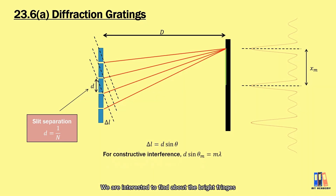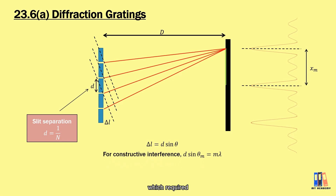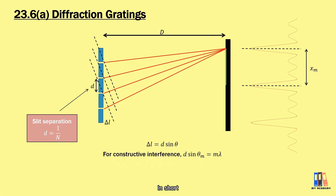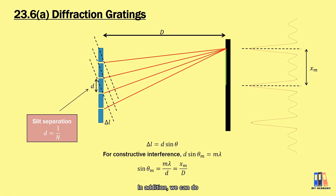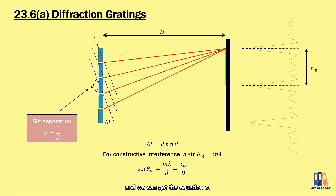We are interested in finding the bright fringes. We are looking for constructive interference, which requires the optical path difference to be mλ. In short, we have the equation d sin θ = mλ, where m is the order of maximum. In addition, we can also apply the small angle approximation as done before, and we get mλ/d = x/D.